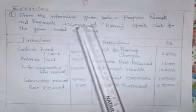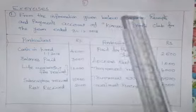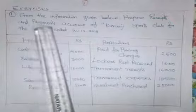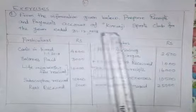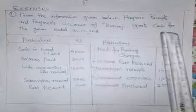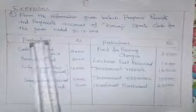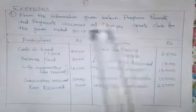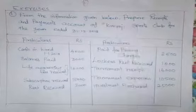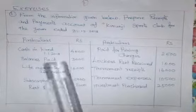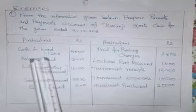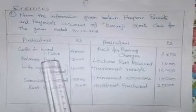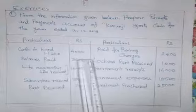From the information given below, prepare Receipts and Payments Account of Kurangi Sports Club for the year ended 31st December 2018. Particulars: Opening Cash Balance on 1st January 2018 — Rs. 4,000.